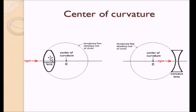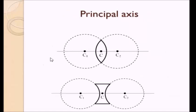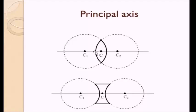Now that we have the idea about center of curvature, let us discuss the principal axis. Just for completion, if this is the lens, then this is one imaginary sphere, this is another imaginary sphere, this is my radius of curvature and this is another radius of curvature. The principal axis is defined as the axis or line that passes through both centers of curvature. So with one center of curvature here and the other here, this line passing through both centers of curvature is called the principal axis of that lens.